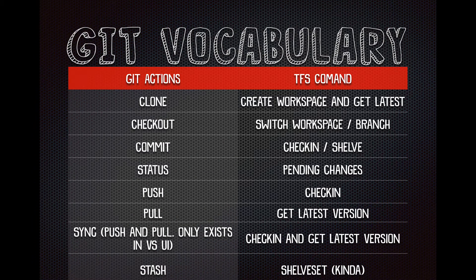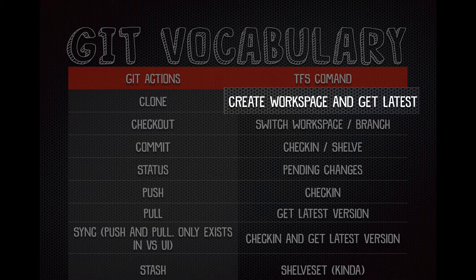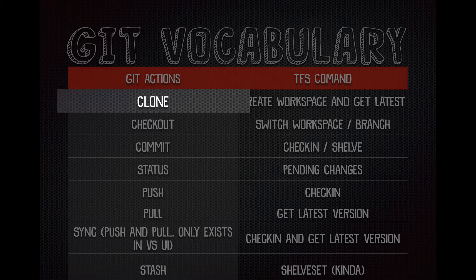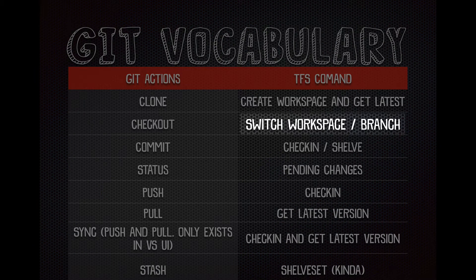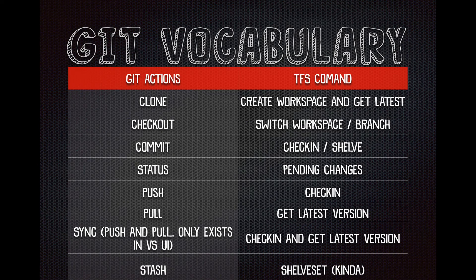Some vocabulary. Git can be confusing if you're coming from another source control tool — for example, TFS or TFVC. In the TFS world, 'create workspace and get latest' is what a Git clone is. If you want to do a Git checkout, that's like a switch workspace or branch. Take note: a Git checkout is not like a TFS checkout, which means 'I have a file, I want to edit it, get away from me, I'm editing this file.' That's not what you do in Git. A Git checkout is switching your branch.